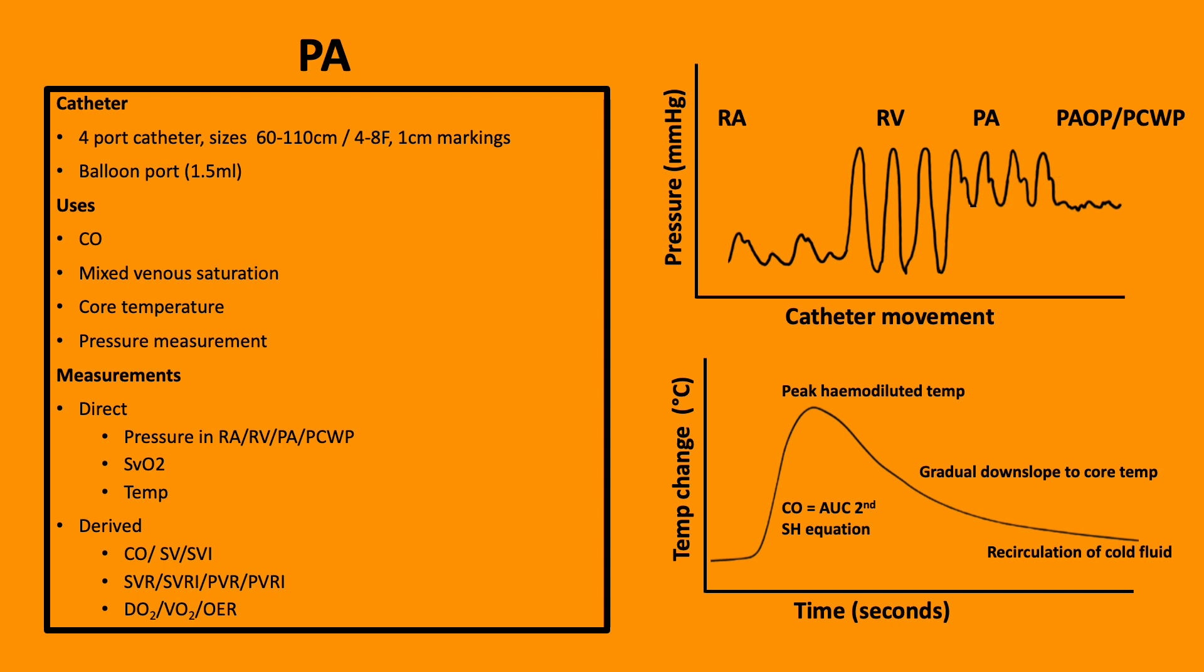The characteristic waveform is produced as the catheter moves from the internal jugular vein through the right side of the heart and up into the pulmonary artery. As the catheter is inserted into the right atrium, the pressure should be less than six millimeters of mercury. It will pass through the tricuspid valve suggesting a more pulsatile waveform and thus RV contraction.